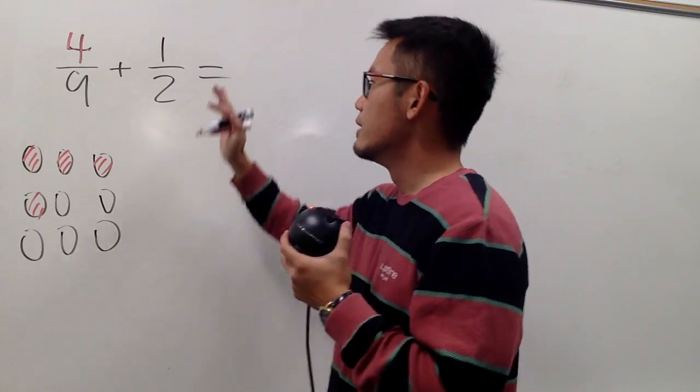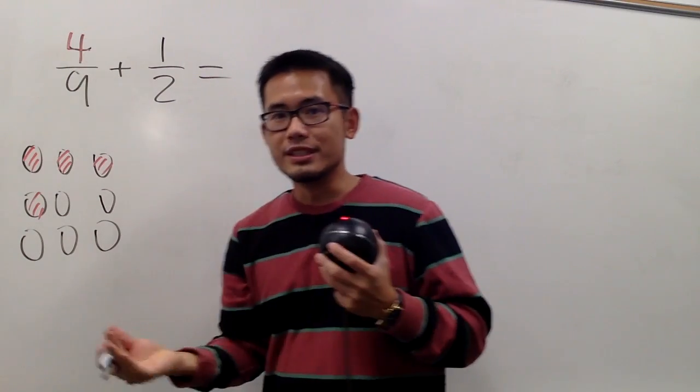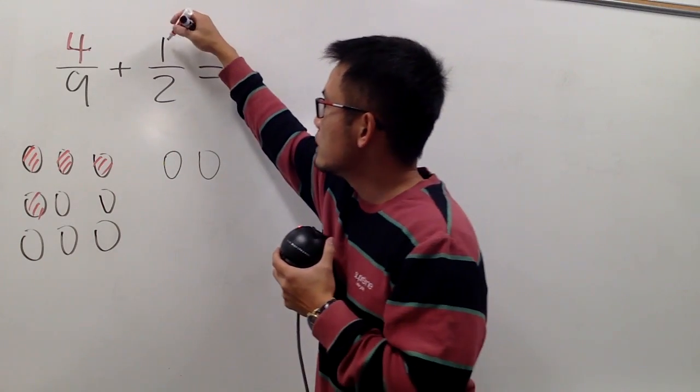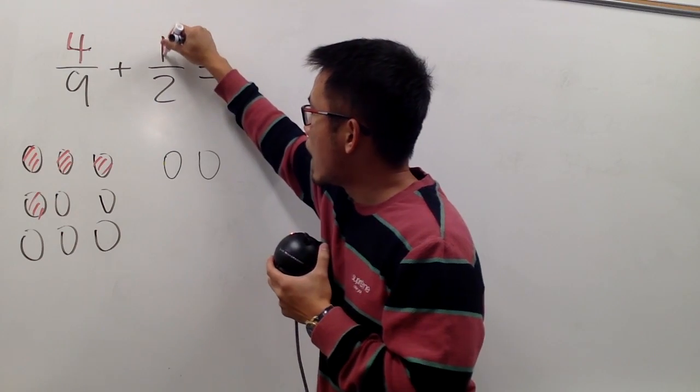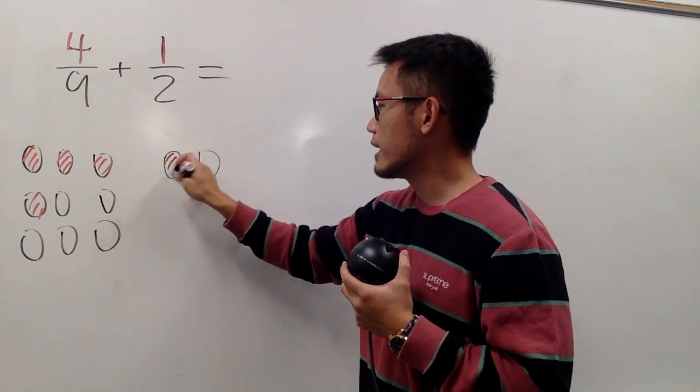And now, for this one, we have 1 half. So, let's see, what does this mean? Imagine we have 2 Oreo cookies, and let me just draw this right here. And because on the top, we only have 1, so we can just say, among these 2, we'll just take 1 of them.